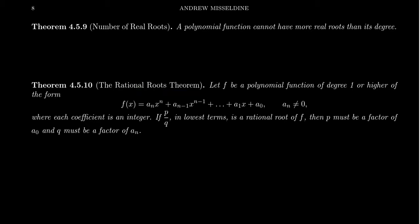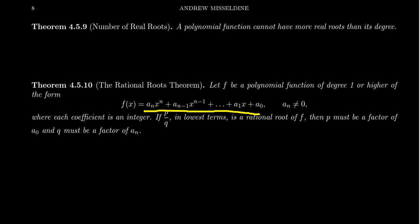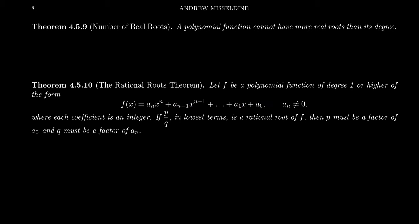Let f be a polynomial function of degree 1 or higher — so it's not a constant polynomial. Here's the generic polynomial. The leading coefficient is not 0, and it does actually have some variable in play. And suppose that all of the coefficients are integers: whole numbers, positive or negative, or 0. All of that's okay.